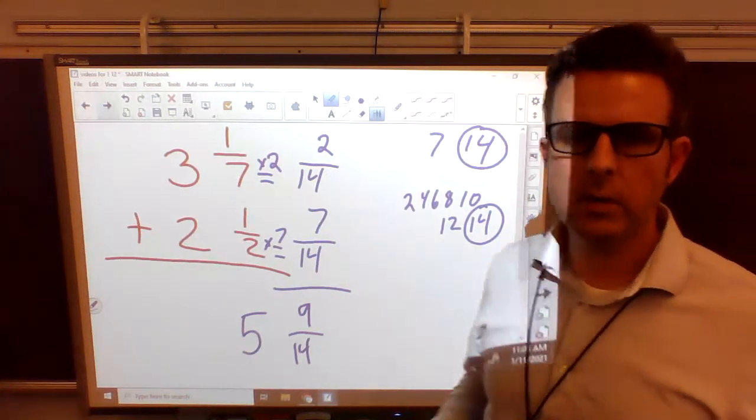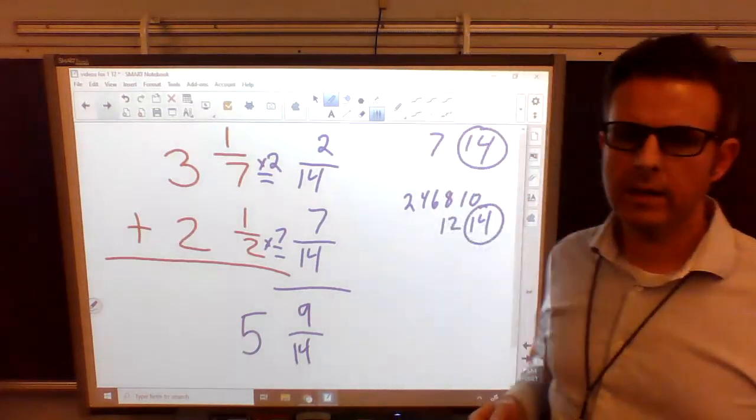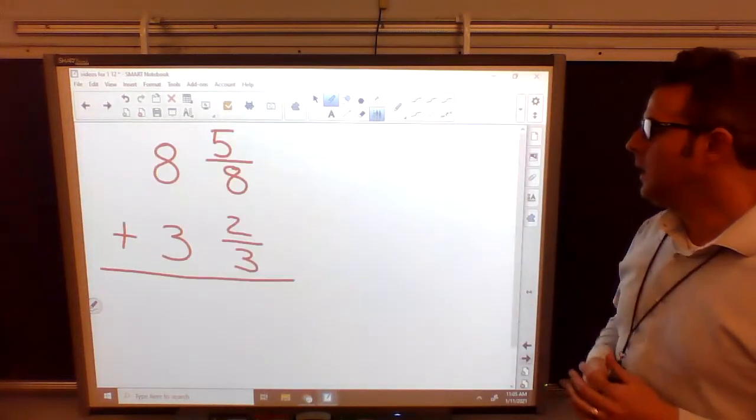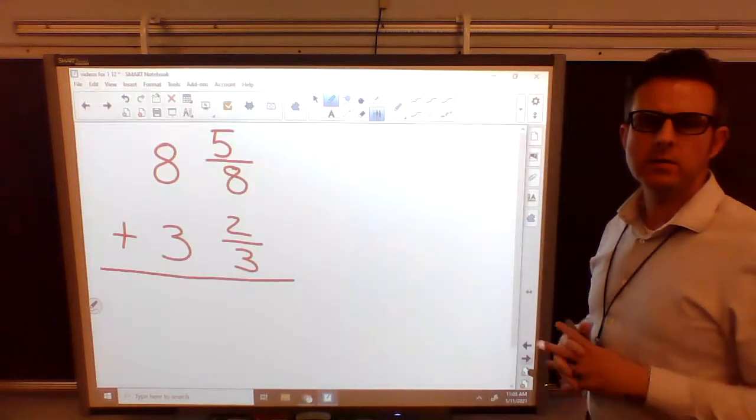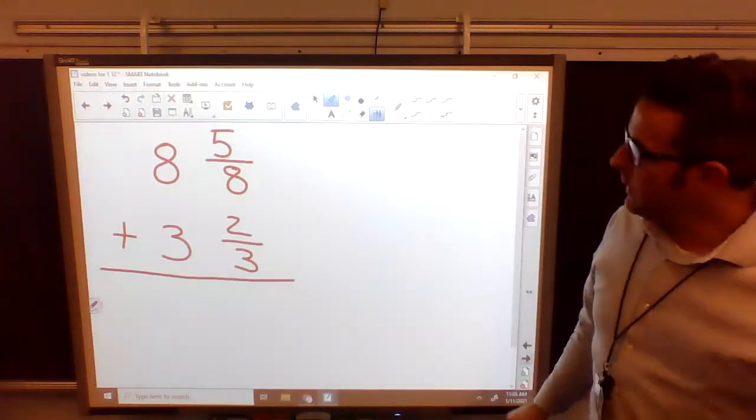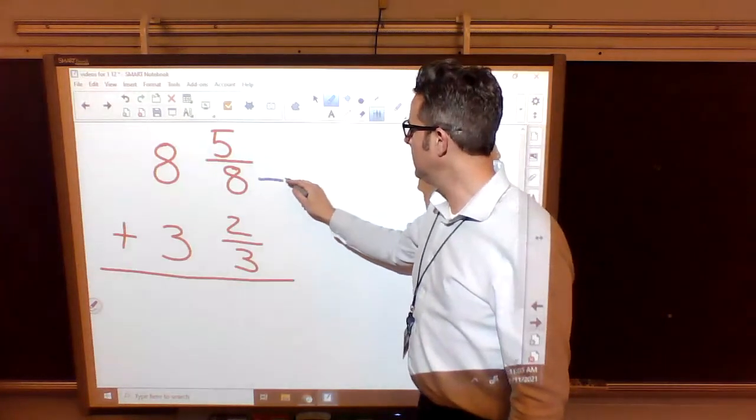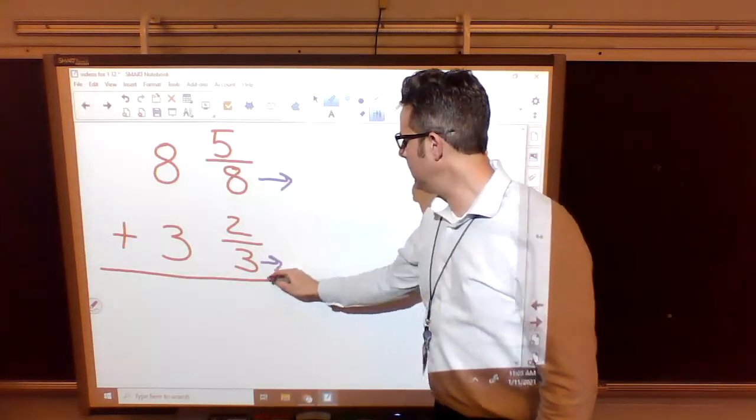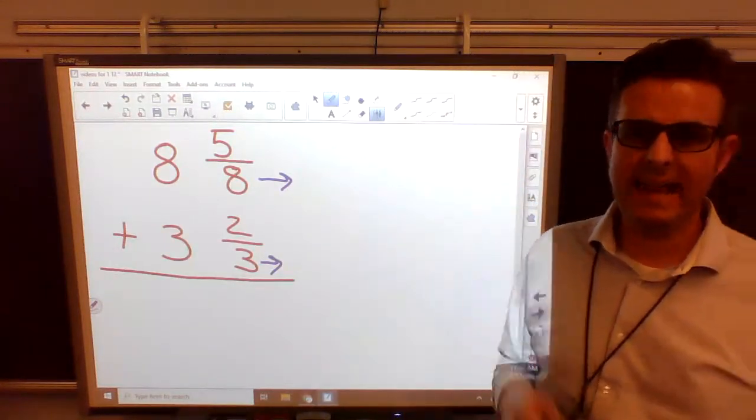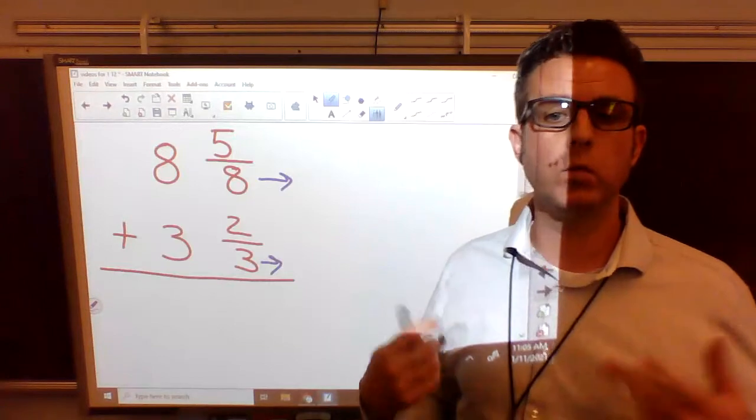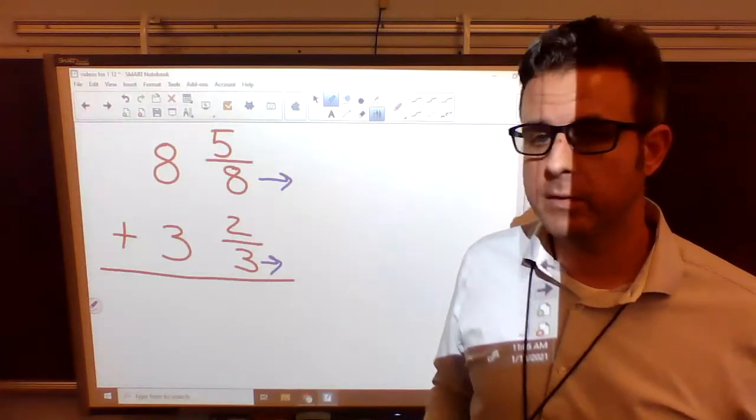The following two, we're going to regroup. We'll see what that means. So on this one, we have 8 and 5/8 and 3 and 2/3. We're adding them together. Again, we have an 8 and we have a 3. We have to make them the same. We have to find the least common multiple. If we skip count by 8s, if we skip count by 3s, what is the first number that appears in both of them?